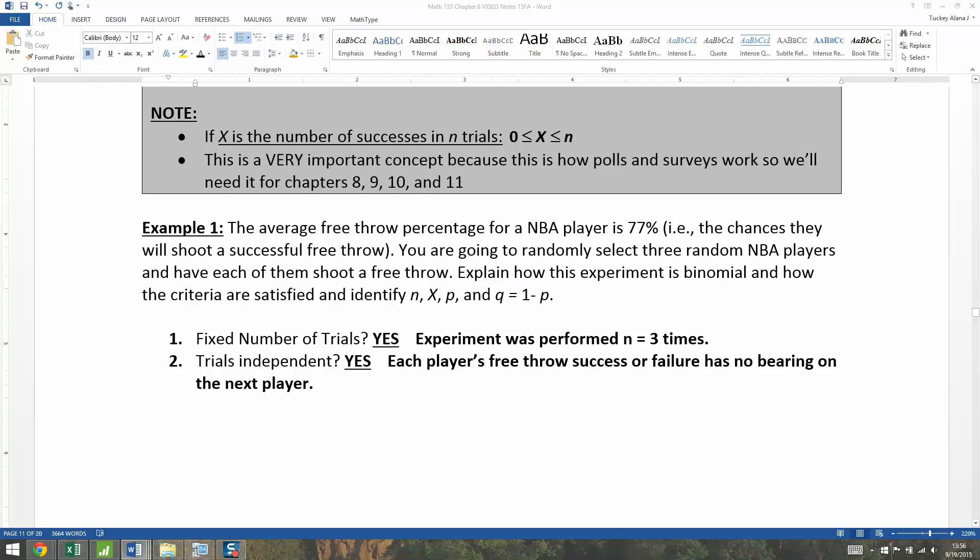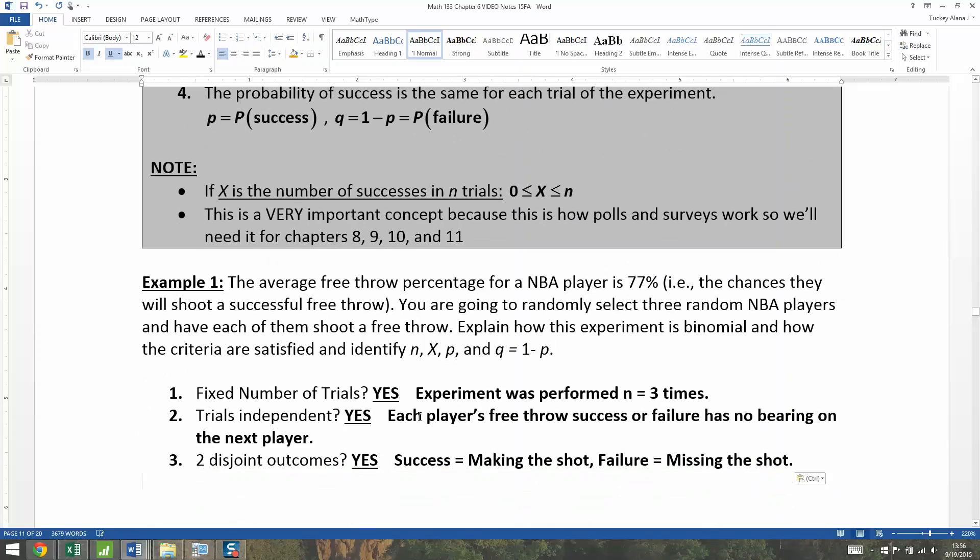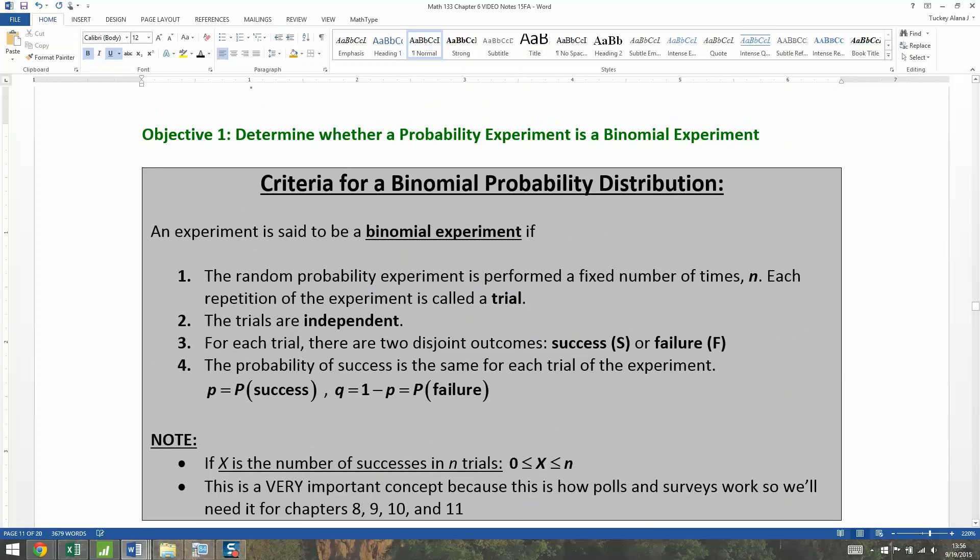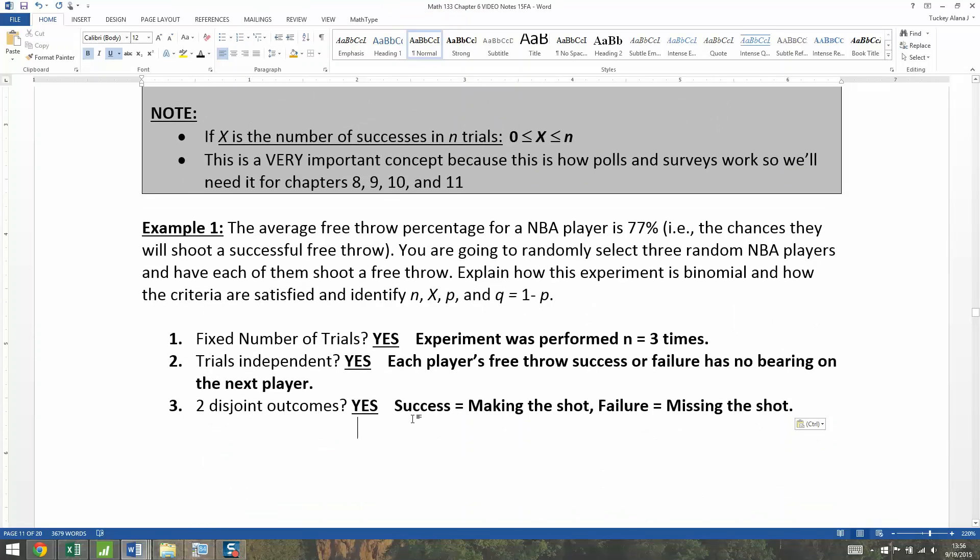Now are there two disjoint outcomes? Well absolutely there are. There's making the shot and missing the shot. Pretty easy with something like this. So we're converting making the shot, missing the shot—that action, you can envision the ball going through the hoop—that's becoming a number for us. We're going to call it success and fail. Speaking of which, let's actually convert it into a number. The success is making the shot, the failure is missing the shot. Those are the words, that's the qualitative part, and we want to convert it into the quantitative part.